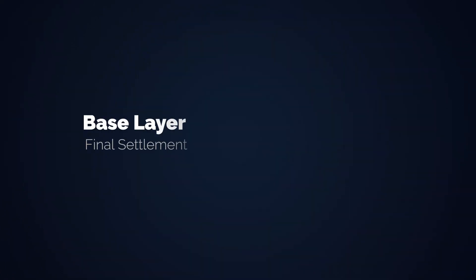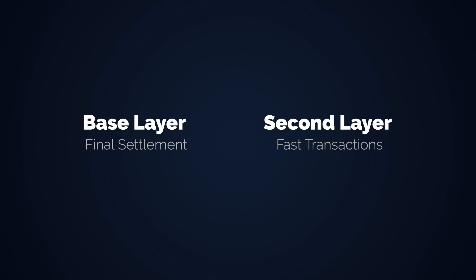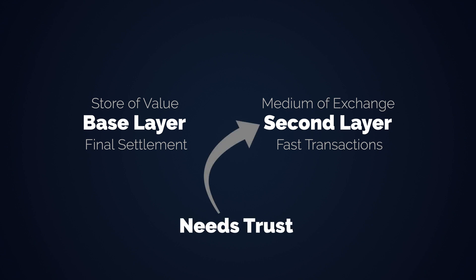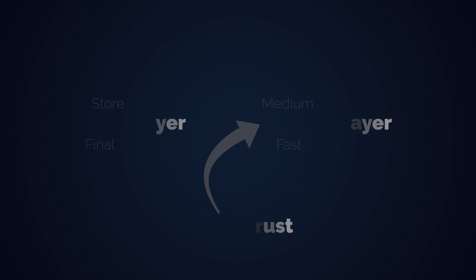As we previously learned, the base layer of a monetary system is usually good for storing value and not for a medium of exchange. This is also why comparing Bitcoin to credit cards is utterly useless. Credit cards are actually much slower when it comes to the final settlement of transactions — they just offer credit with counterparty risk in the meantime. A merchant trusts his customers that the credit card transaction will eventually settle, but it's not instant at all.